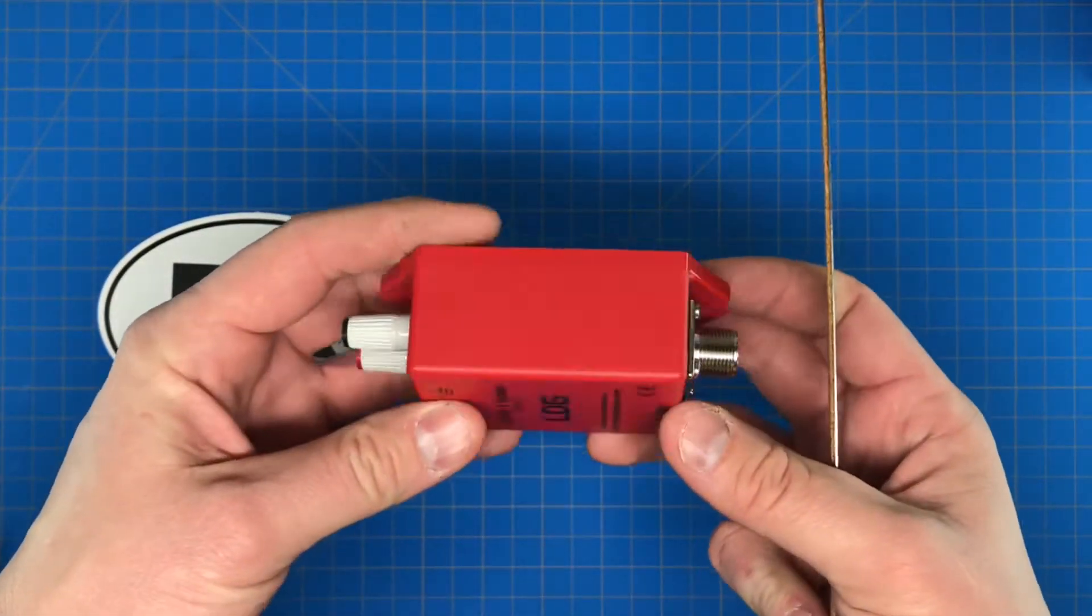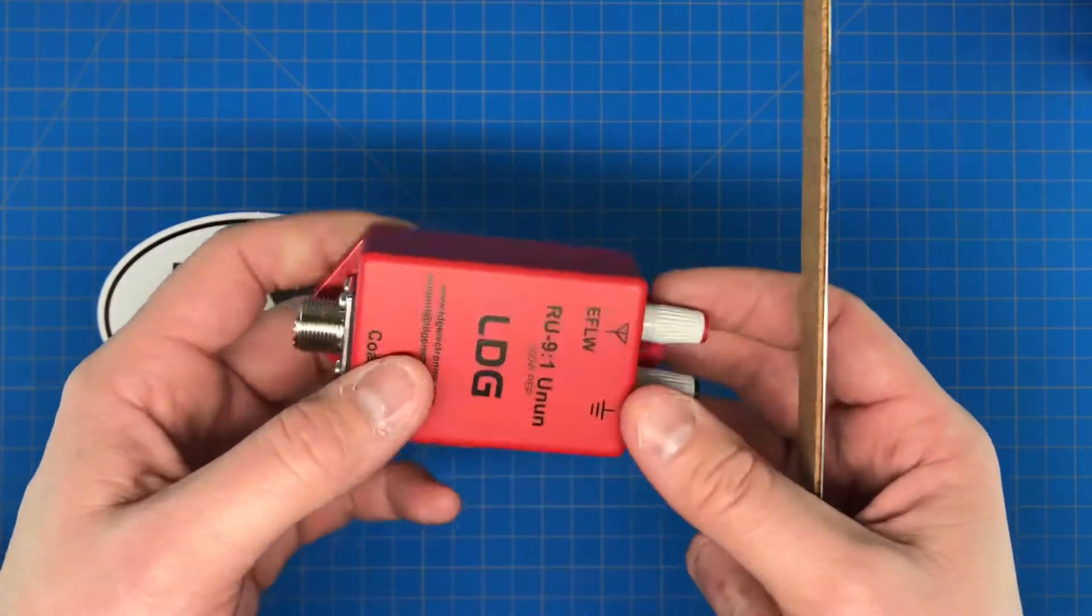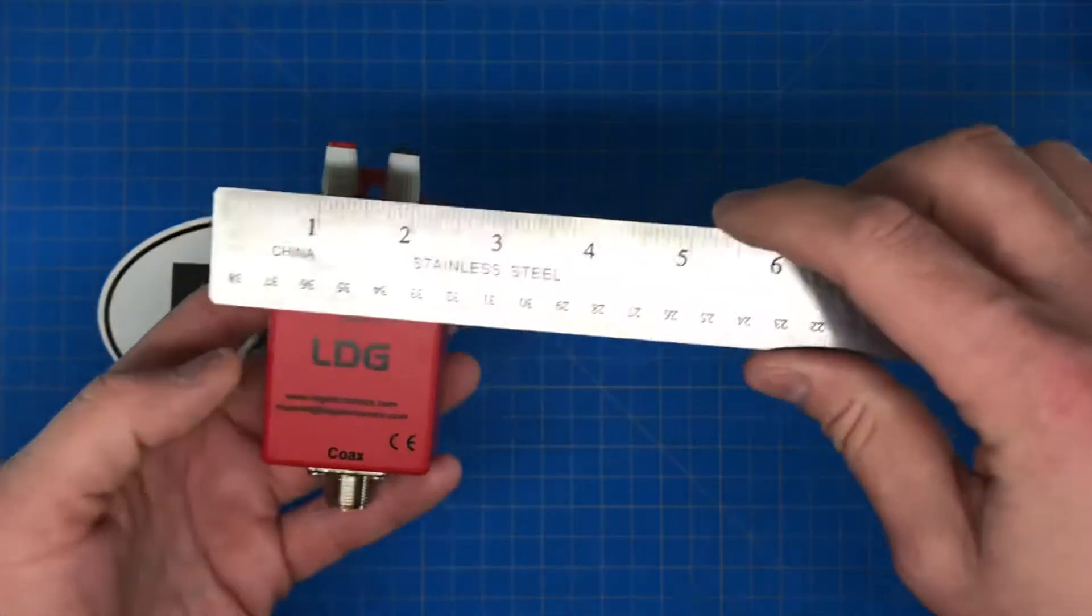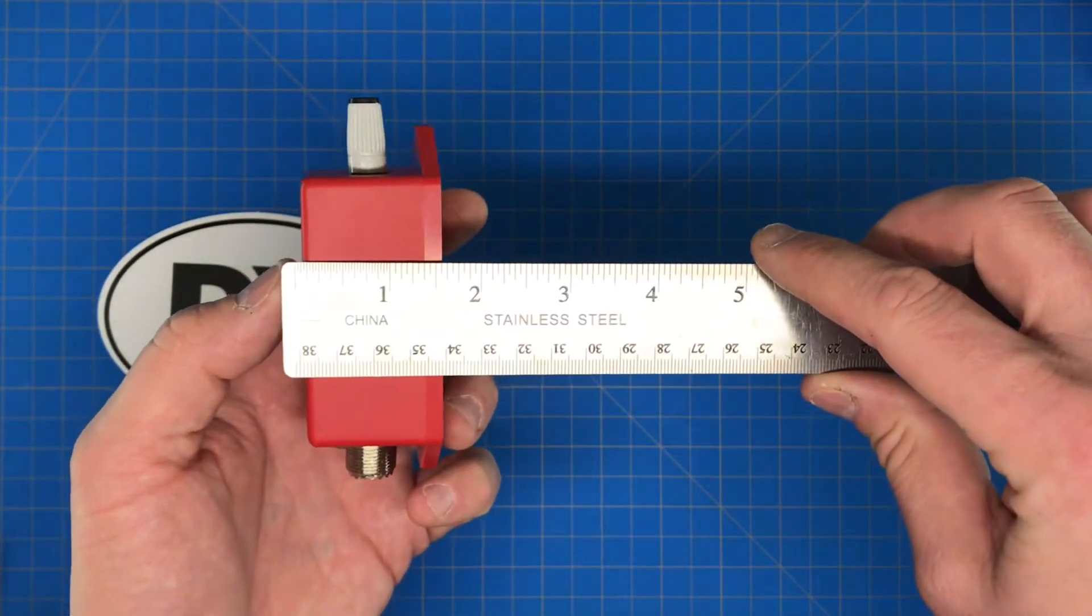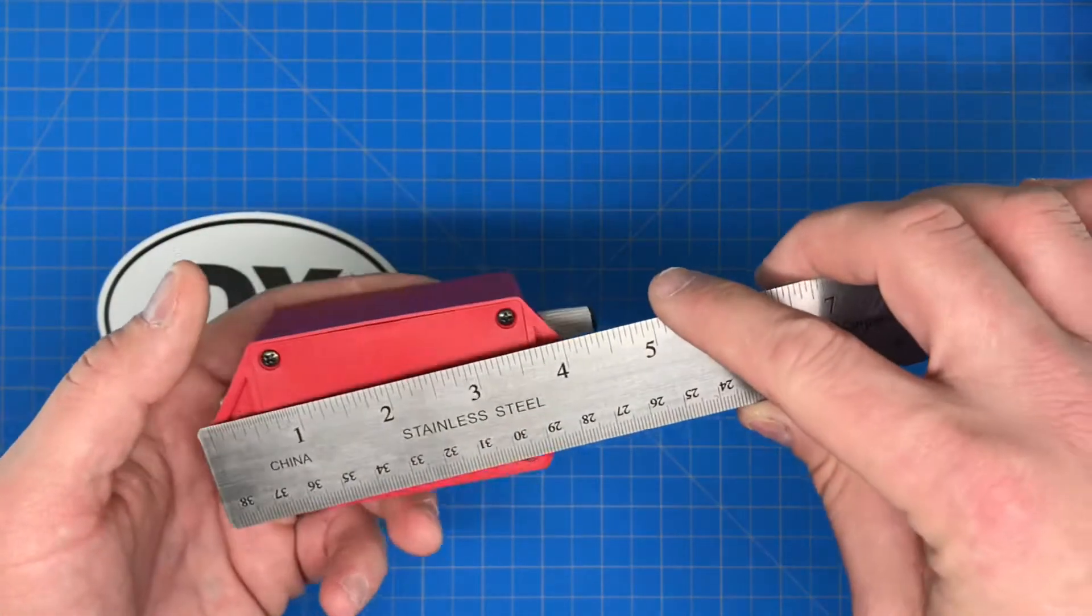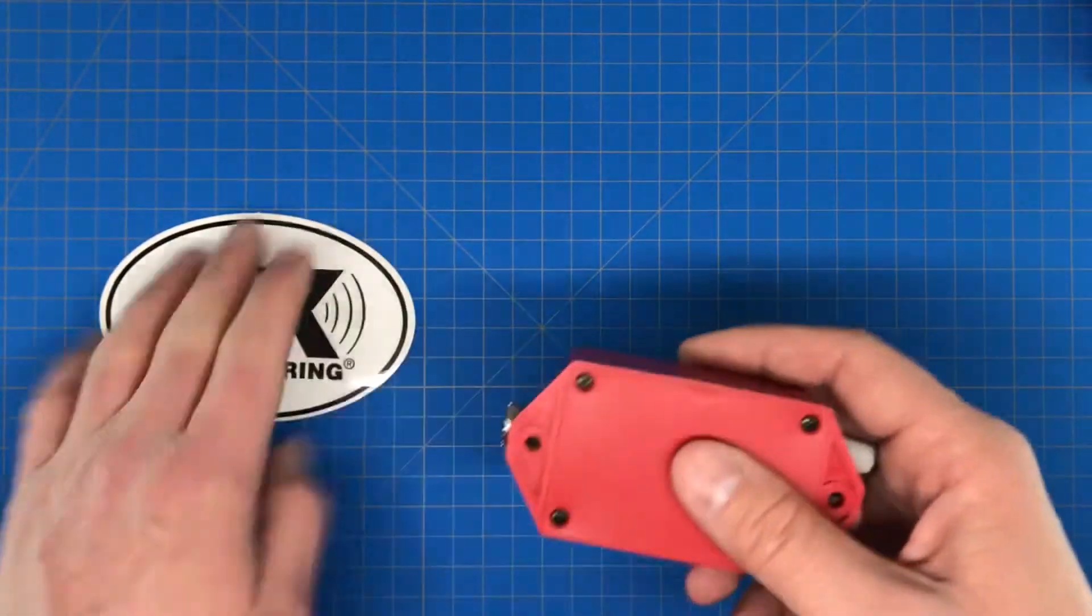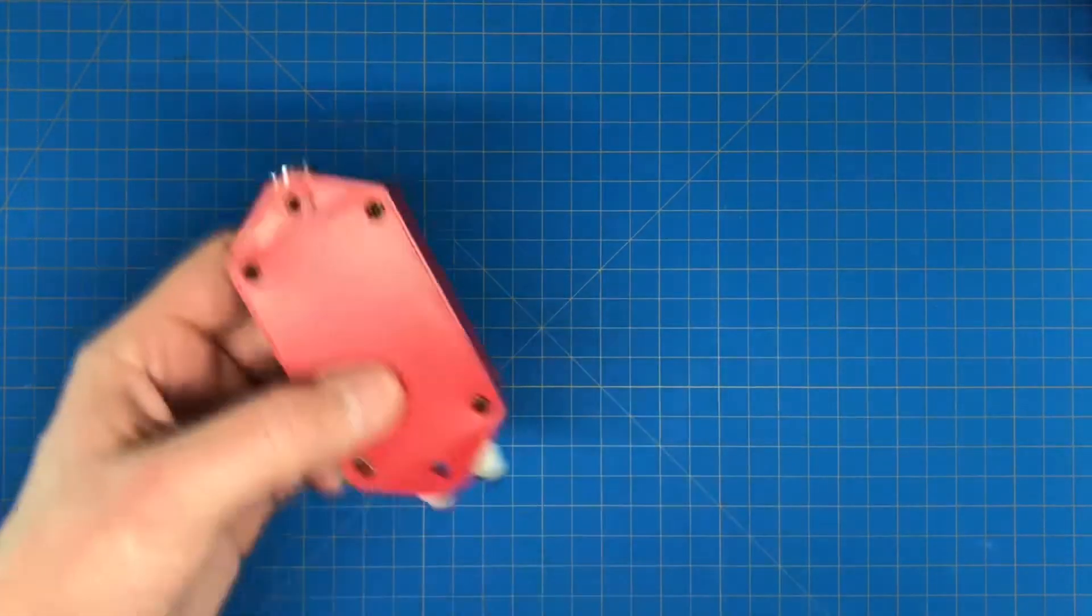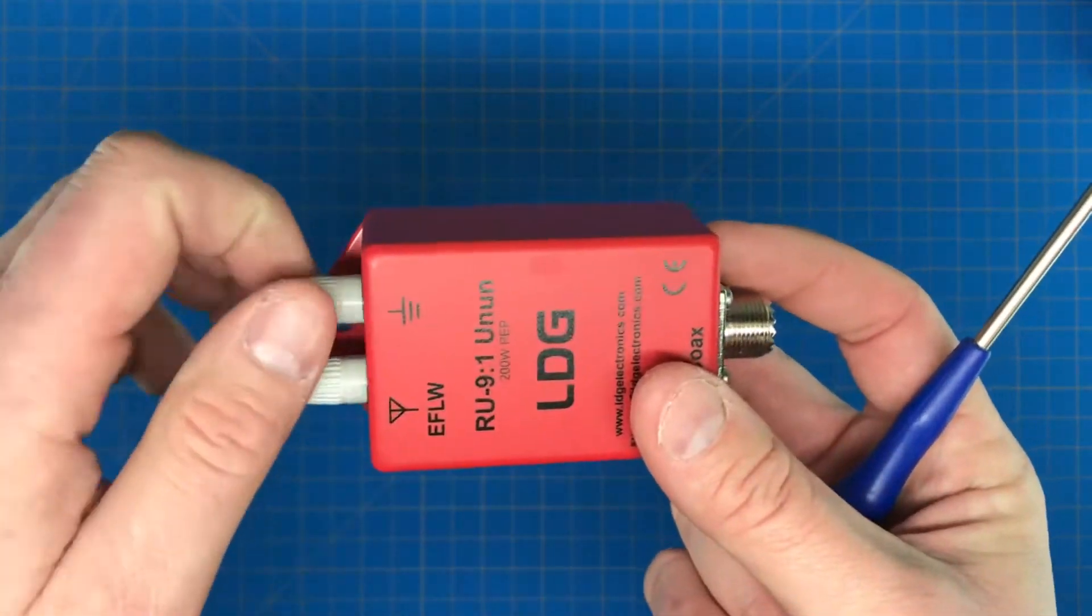Just looking at it, I kind of expected it to be a little smaller, but it's not huge. Quick measurement: two inches across the top, about an inch and a half, and four and a half inches long. So we'll open it up and take a little look inside, check out the quality.